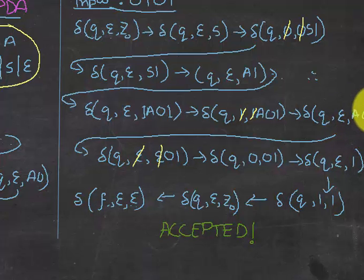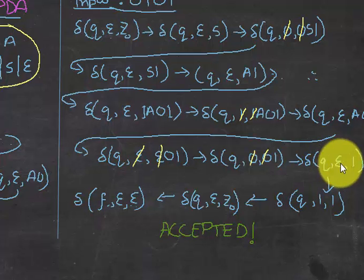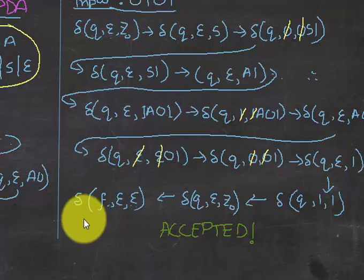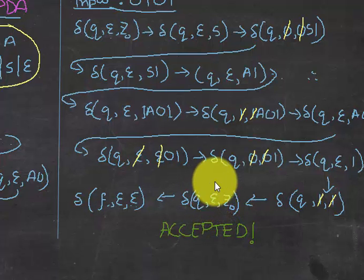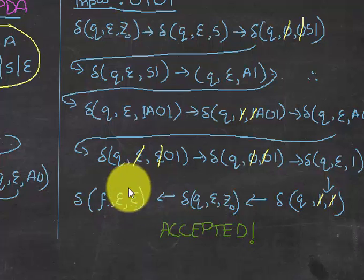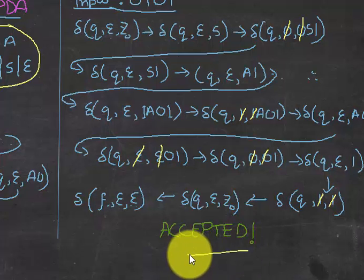You just need 01 to be consumed. Take 0 as input — consume the zeros — left with epsilon and 1. Take 1 as input — 1 and 1 are consumed — you get epsilon. There is nothing in the stack except Z₀ on top. After removing the stack symbol, we reach the finishing state. So this PDA is accepted.